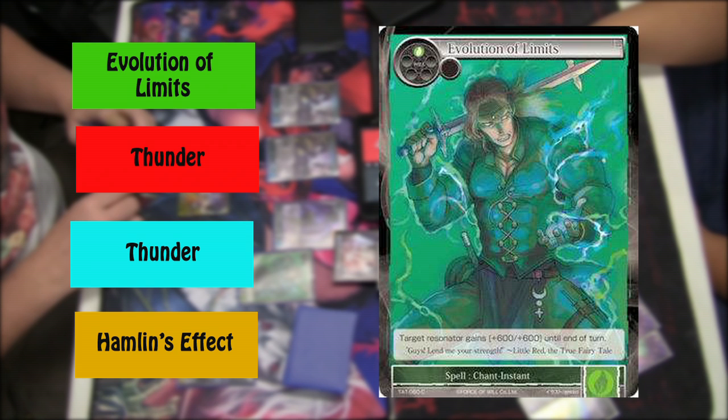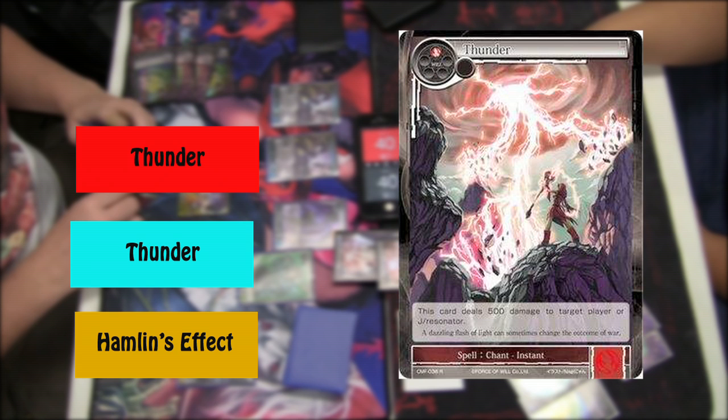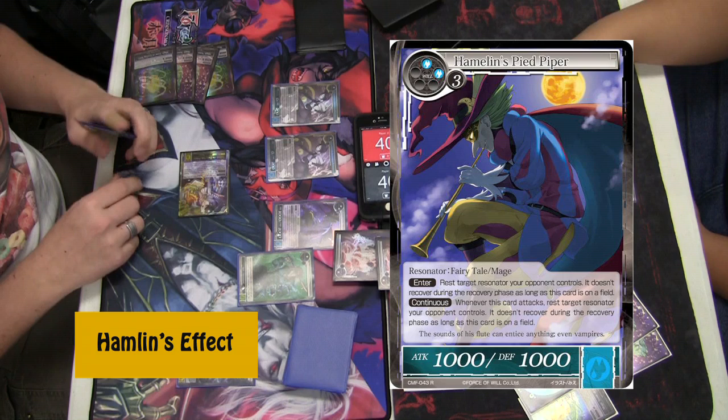Evolution of Limits resolves, pumping up my Hamelin. Thunder 1 resolves, dealing 500 damage to Hamelin. Thunder 2 resolves, dealing an additional 500 damage to Hamelin, but not killing him because of the extra defense. And then Hamelin's Enter effect will resolve, and I'll get to lock down one of his creatures.